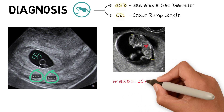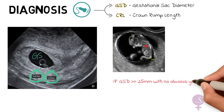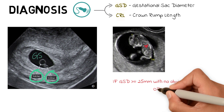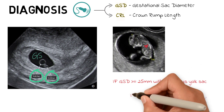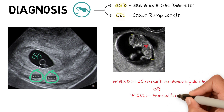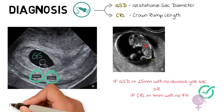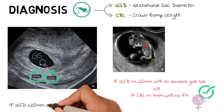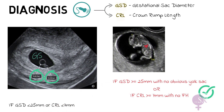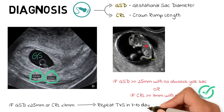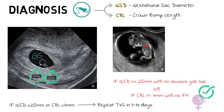We can diagnose a miscarriage if the GSD is greater than or equal to 25 mm with no obvious yolk sac, or if the fetal pole has a CRL greater than or equal to 7 mm with no evidence of fetal heart activity — these will confirm the presence of a miscarriage. If the GSD is less than 25 mm with no yolk sac, or the CRL is less than 7 mm with no fetal heart, the ultrasound must be repeated in around 7 to 10 days to give time for the pregnancy to grow.